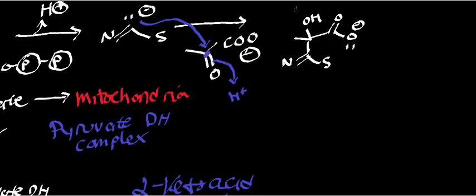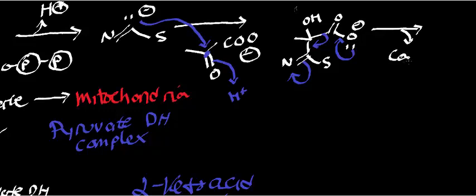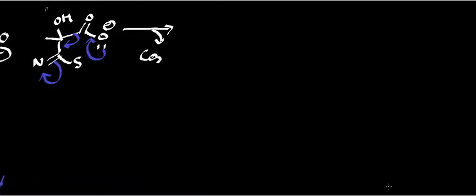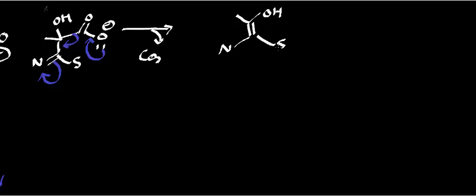On this oxygen there's a lone pair, so those electrons kick in, forming a double bond. This causes the carbon–carbon bond to break, and the electrons kick back onto the nitrogen. In this step, we lose carbon dioxide, and we generate an enol intermediate attached to thiamine pyrophosphate.